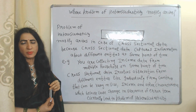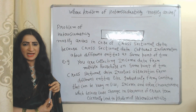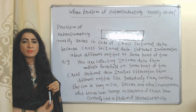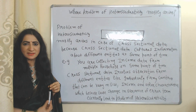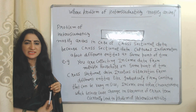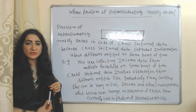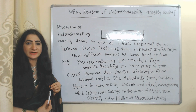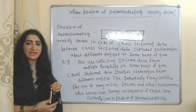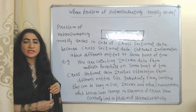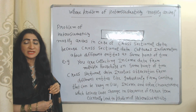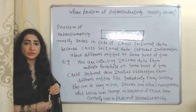Where does the problem of heteroskedasticity mainly arise? It mainly arises in the case of cross-sectional data. Cross-sectional data captures information about different entities at the same point in time. For example, you are collecting income data from multiple households at the same point in time.